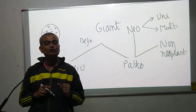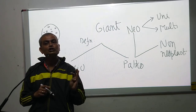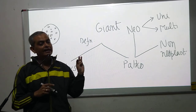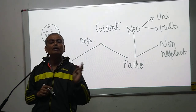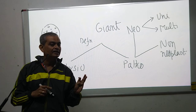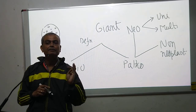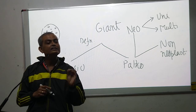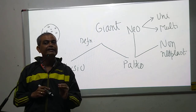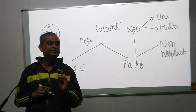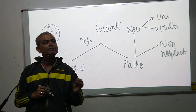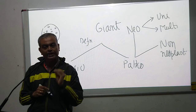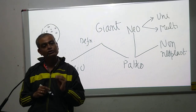This is a simplified approach to giant cells. Whenever writing a short note, you must write the definition, then the types, then draw one or two pictures, and finally write the importance. The importance of giant cells is that in some cases they may help to identify the pathological condition. For example, Langhans type of giant cell, when present, is pointing towards the diagnosis of tuberculosis.